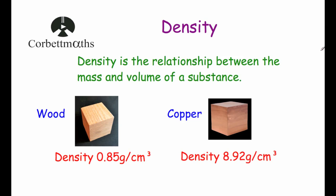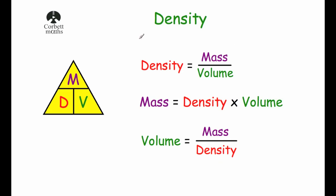Now let's look at the relationship between mass and volume in a bit more detail. Density is calculated by the formula mass divided by volume. If you divide the mass of an object by its volume, that gives you the density. Rearranging that — if you multiply both sides by volume — you get that mass is equal to density times volume.